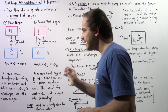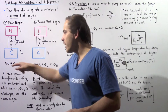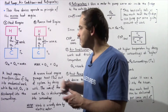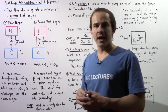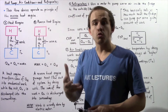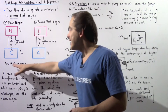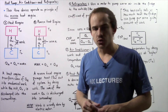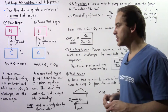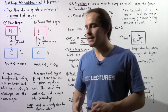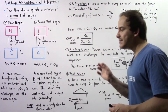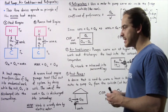Inside a heat engine, we have QH of heat that is transported into our engine. Some of that QH is transformed into work, and the rest of that is discharged back into the surroundings. So a heat engine transforms some of the QH into mechanical work, while the rest of it, QL, is discharged into the surroundings.